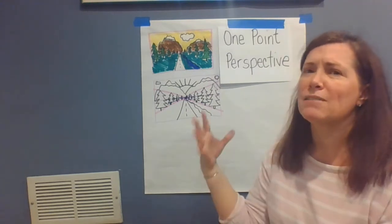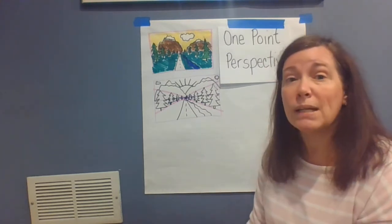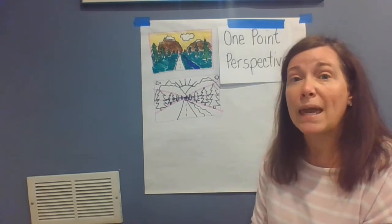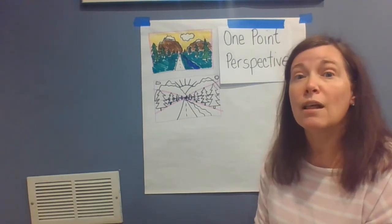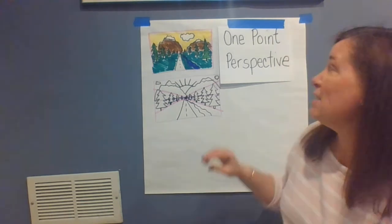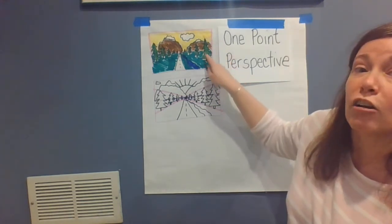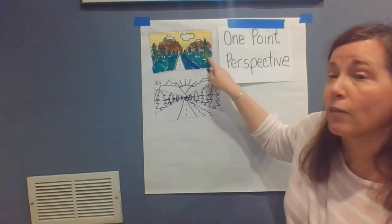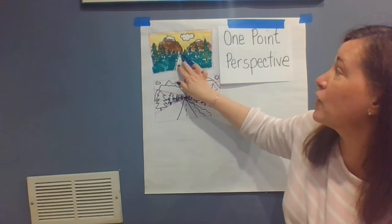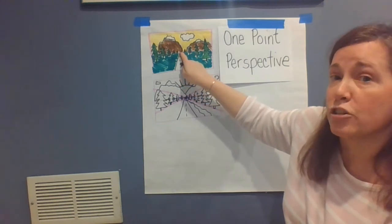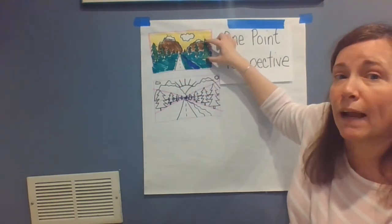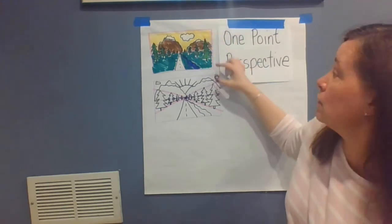One-point perspective changes that just a little bit. It uses these lines and rules to make something look three-dimensional. The foreground, the middle ground, and the background just get a little bit different. Things that are closest are still in the foreground, but as they get further away, they recede into a vanishing point. So we still have the foreground and then the middle ground.